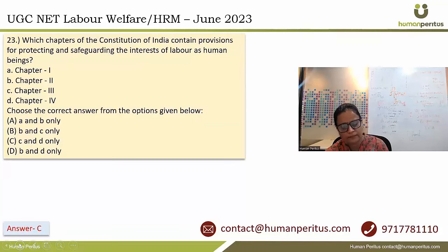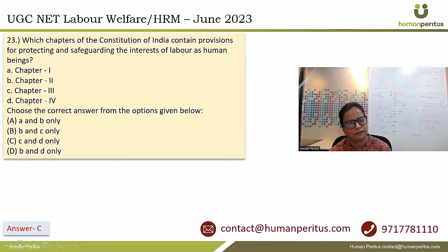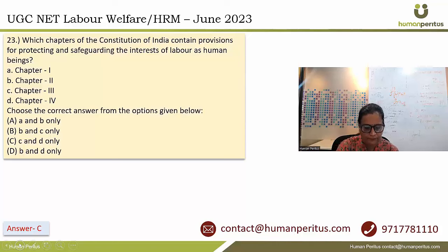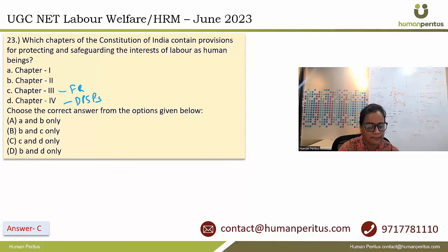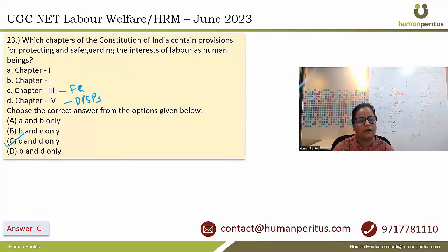Which chapters of the Constitution of India contain provisions for protecting and safeguarding the interest of labour as human beings? Chapter 3 covers Fundamental Rights and Chapter 4 covers DPSPs. So the answer is C and D, and accordingly option C is the correct answer.